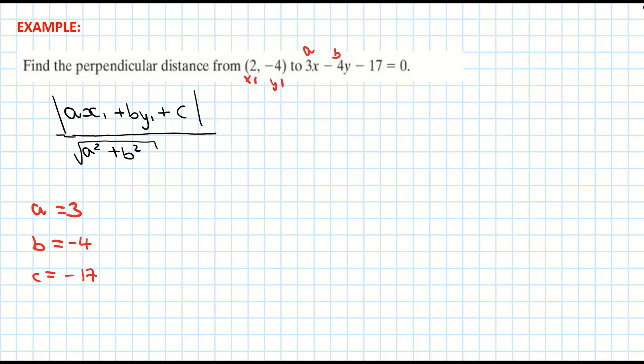So now I'm going to fill in my formula. Best thing to do here is to use brackets. It's going to be 3 within a bracket times my x₁, which is 2. The formula then has a plus b, which is giving me -4 times my y₁, which is -4 as well.